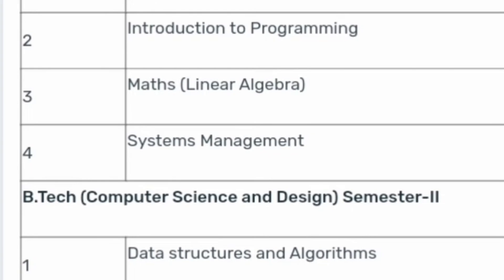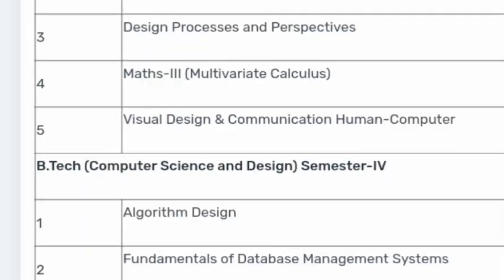This specialization is more design-focused than hardcore programming, but you still learn many computer languages. In the first semester, you study math, systems management, and introduction to programming. Second semester covers data structures and algorithms, design drawing and visualization, and mathematics 2. Third semester includes advanced programming, computer organization, design process, maths 3, and visual design and communication.